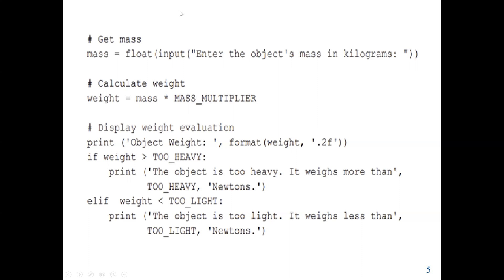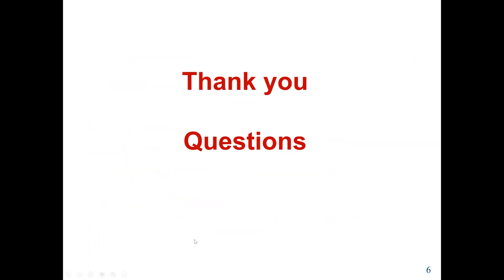Now we find the weight, which completes the input and process steps. We then display the result — printing the object's weight in newtons. We check: if the weight is greater than too_heavy, which is 500, we say the object is too heavy. If the weight is less than too_light, which is 100, we say the object is too light. That concludes these lectures. See you in the next one. Thank you.